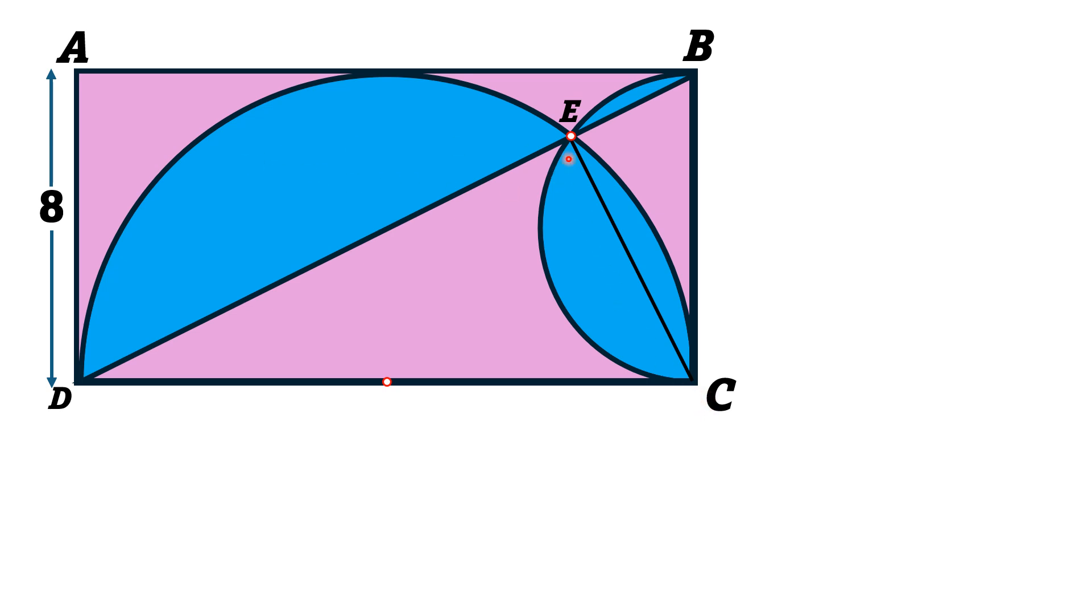So the blue shaded region is divided into four regions. Let we give them names. Let's say that this region is A1, this region is A2, this region is A3, and this region is A4. We have to find the sum of these four areas: A1, A2, A3, and A4.